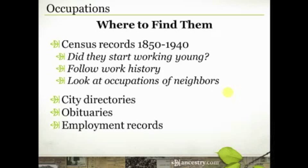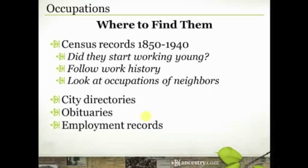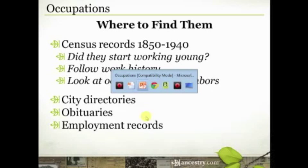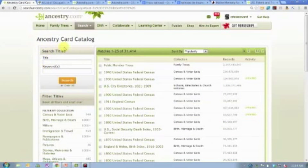The last place to look for occupational information is employment records. Usually you'll be following clues from census records that lead you to these, but sometimes you start here and work your way back. Employment records are a really rich resource. On Ancestry.com we do have some employment records. I'll show you where to find those, but in some cases you actually have to go to the organization, the union, or a local archive, museum, or library to get those records.